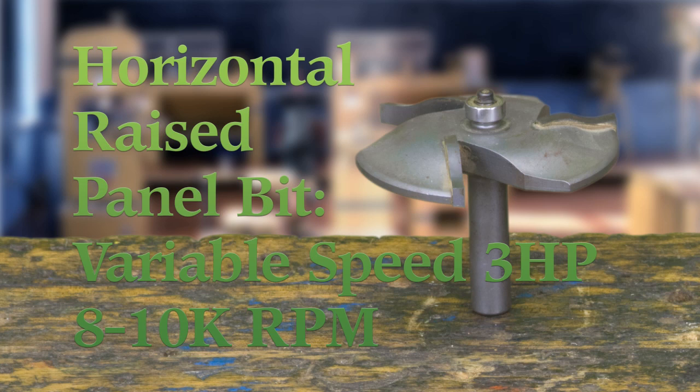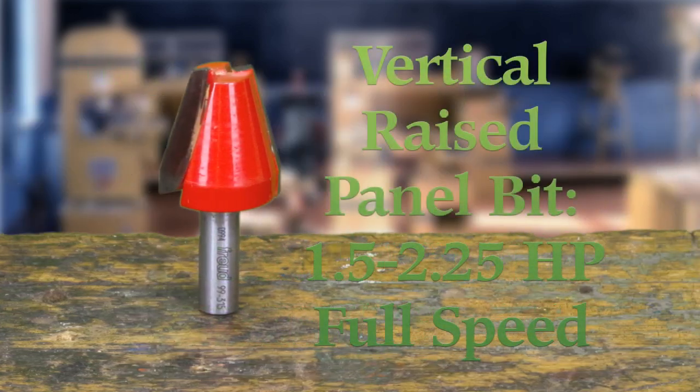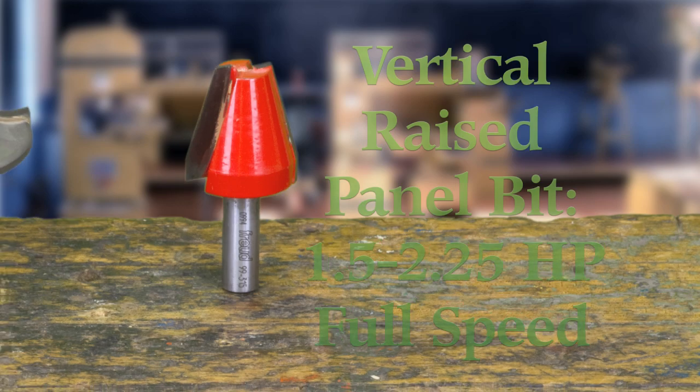Horizontal bits will cut cathedral panels but require a three horse, variable speed router set at eight to ten thousand RPM. Vertical bits will not cut cathedral panels. They require a one and a half to two and a quarter horsepower router and are run at full speed. In addition, you'll need a taller sub fence for your router fence or use a horizontal table.